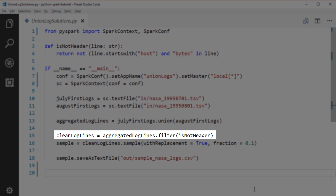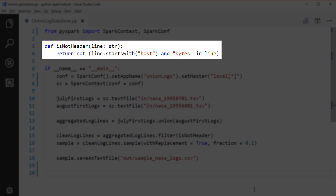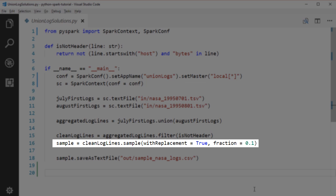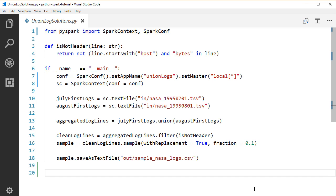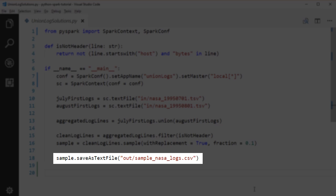Then, we filter out the header lines. We have extracted the filtering logic to a separate method called isNotHeader. We get back a clean log file RDD, which doesn't contain the header lines. Then, let's take a sample of 0.1 on the RDD. Lastly, save the resulting RDD as a text file.